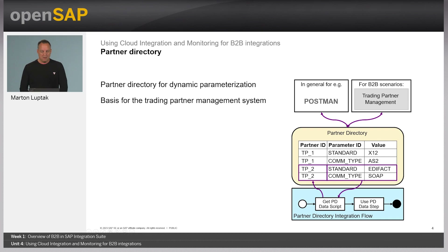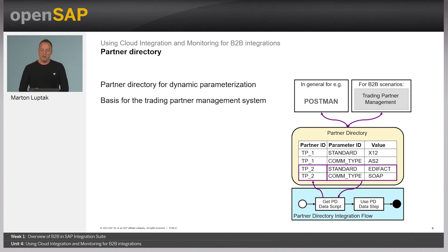The partner directory data includes the trading partner ID — for example, tp_2 — with a dedicated parameter ID indicating the communication standard, such as the type system EDIFACT with attribute value EDIFACT and communication type SOAP. The configuration for communication adapters and standard formats is maintained in the trading partner management system, and the drop-down menu offers a complete list of supported type systems, communication types, and related adapters.